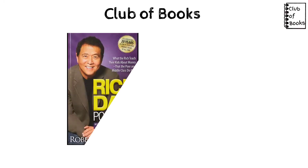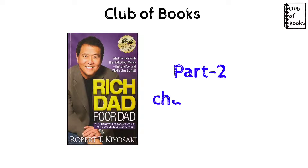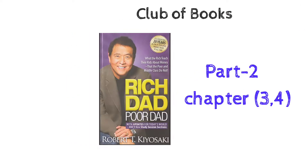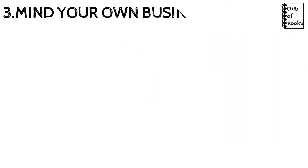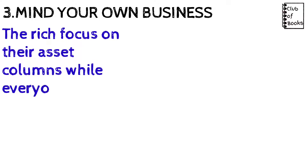In Club of Books today we are going to see the book 'Rich Dad Poor Dad.' In this we are going to see Part Two, covering the third and fourth chapters. In the third chapter, 'Mind Your Own Business,' the rich are focused on their profit and the asset column, whereas everyone else is focused on their income statement.